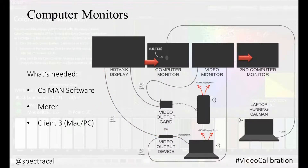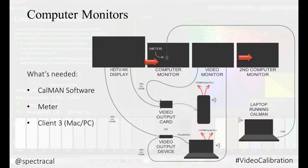For computer monitors, you want to optimize the internal controls first, if they have any. On a lot of displays they may not have them — for example, on the Apple Cinema display there are zero controls, so everything is done in the graphics card output. If there aren't controls, you're set with the 1D LUT and ICC profile on the graphics card.